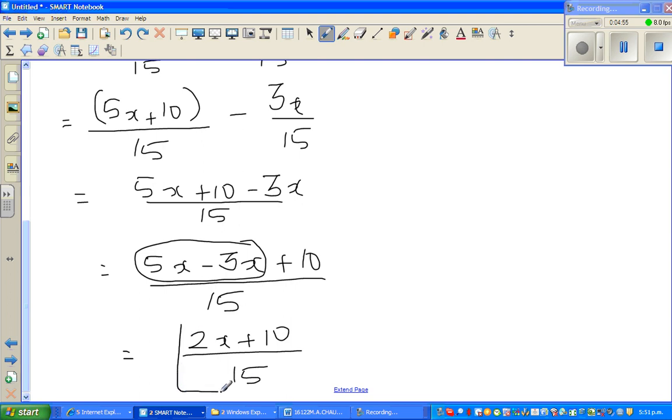Now this is a perfect answer. There's nothing wrong. You can't add 2x and 10 because they're unlike terms. But if you want to factorize this or simplify this a little, you can factor the 2 out. So this is 2 times x plus 5 over 15.